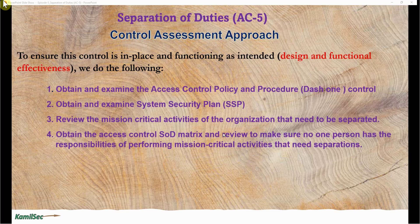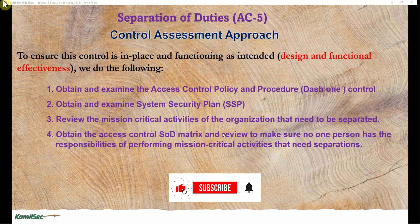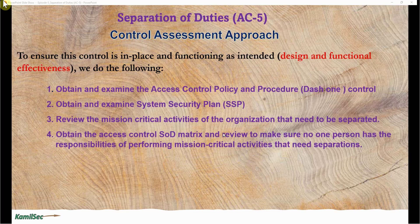You need to see what the organization has identified as crucial roles that should not be conducted by a single person — these will be documented in the SOD matrix. The matrix will tell you which roles or responsibilities should not be given to one person. Once you identify the matrix, you review the roles that were created: if someone has Role A and also Role X, and the matrix states those cannot be combined, that is a finding. That is an example of how you check the SOD matrix.